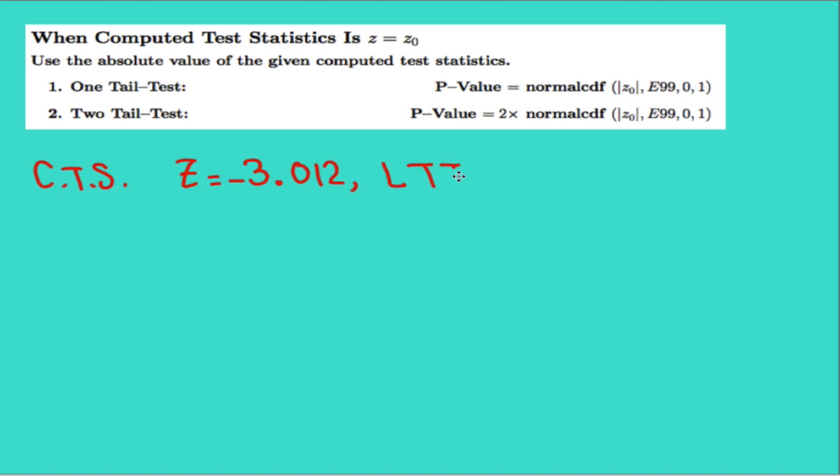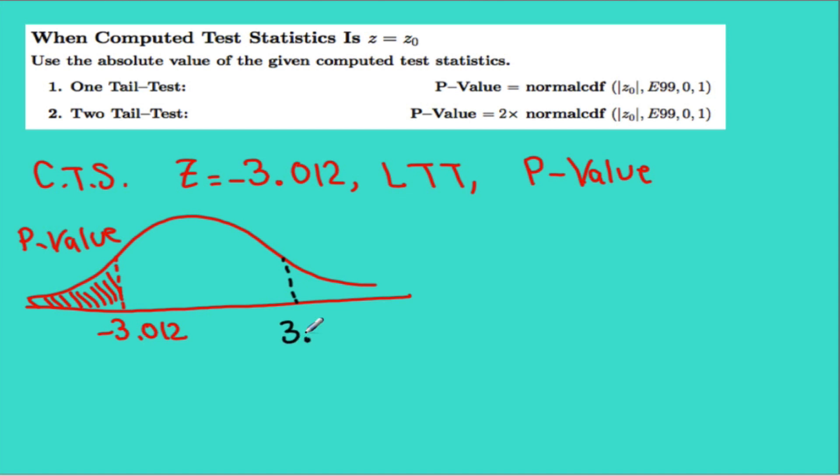Suppose our computed test statistic z is negative 3.012 and the process is a left tail test, and we want to find the corresponding p-value. So graphically I have my normal curve, I have my computed test statistic of negative 3.012. It's a left tail test, so this area represents the p-value. So we're going to use the symmetry and we're going to go to the other side.